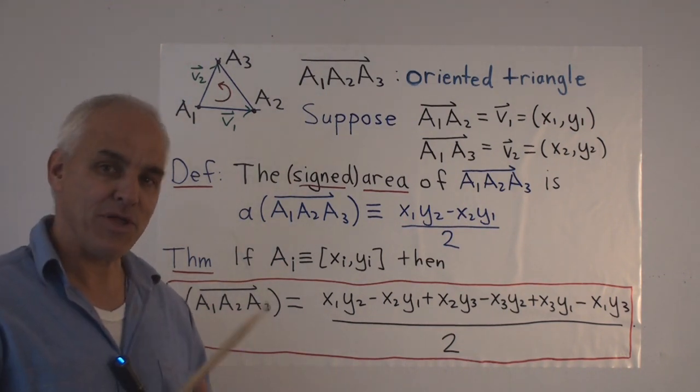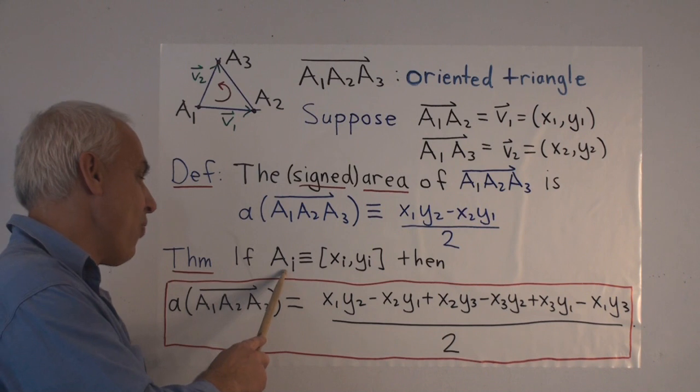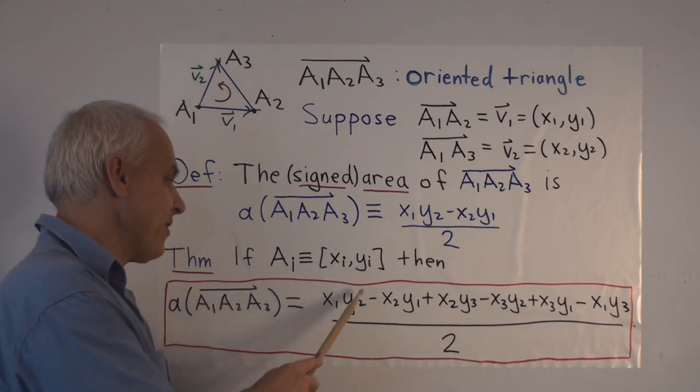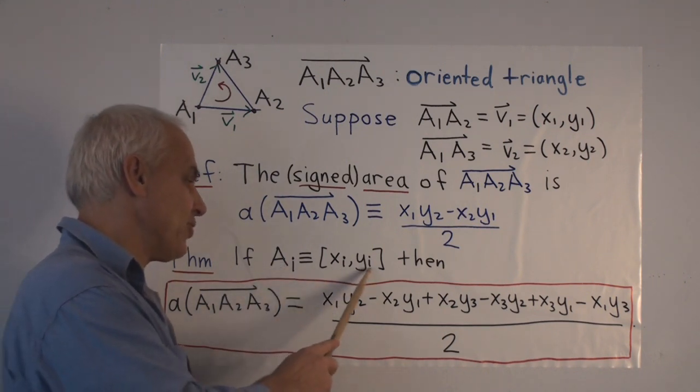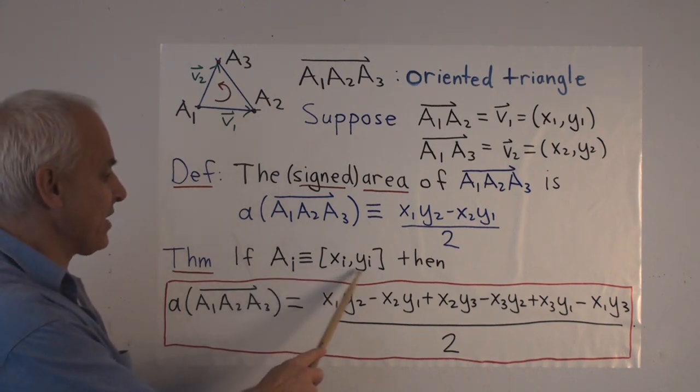And that's accomplished by this following theorem. In this theorem, we use slightly different notation. Suppose that A1 is the point X1, Y1, A2 is the point X2, Y2, and A3 is the point X3, Y3.